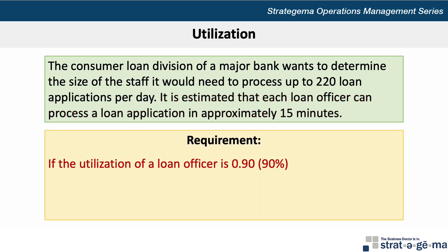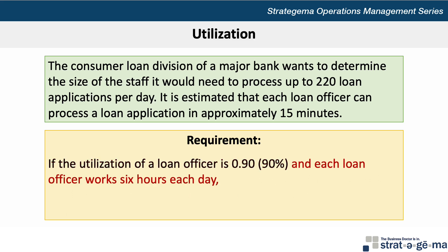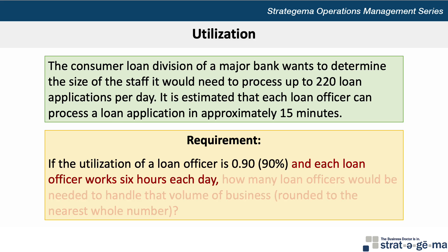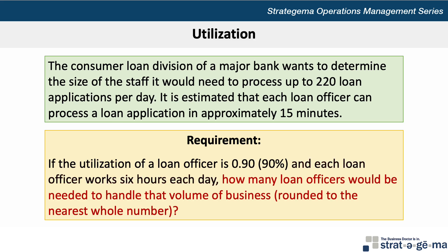Here's our requirement. If the utilization of a loan officer is 0.9 or 90%, and each loan officer works 6 hours each day, how many loan officers would be needed to handle that volume of business, rounded to the nearest whole number?